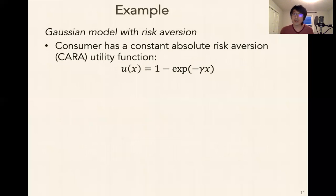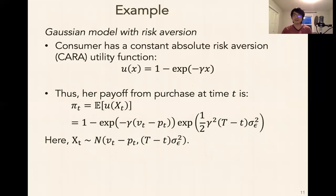So we're going to assume she has this constant absolute risk aversion utility function that's commonly used in the literature. Basically, it just exponentiates the payoff so that you get the risk aversion factor. You lose the linearity of a risk neutral utility function. So if this is the utility function she has, then her payoff from a purchase at time T is the expected value of U of X of T, where X of T is, as I described in the previous slide, it's got a mean of V of T minus P of T, and it has a variance here. And if I plug that into the constant absolute risk aversion utility function, I get this equation here, which is one minus this exponential, some term that just depends on the mean, and some term that just depends on the variance.